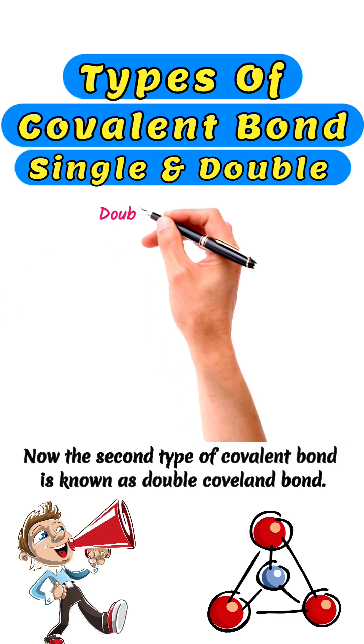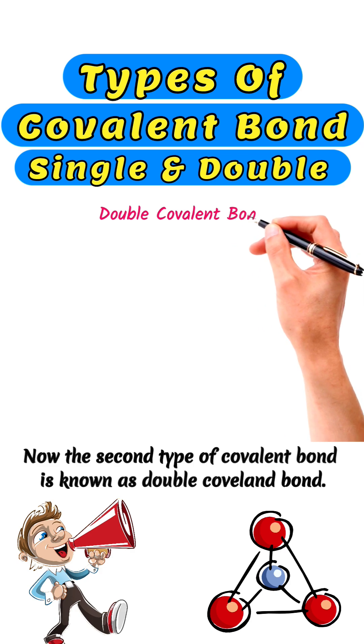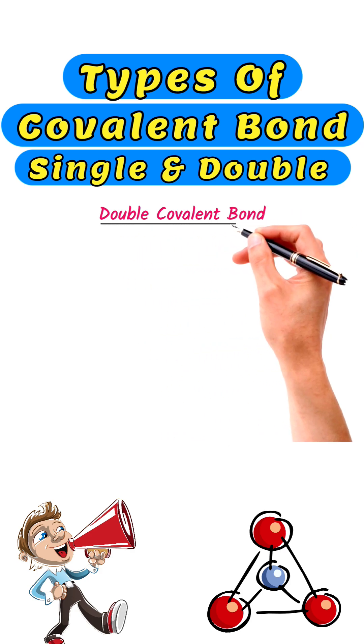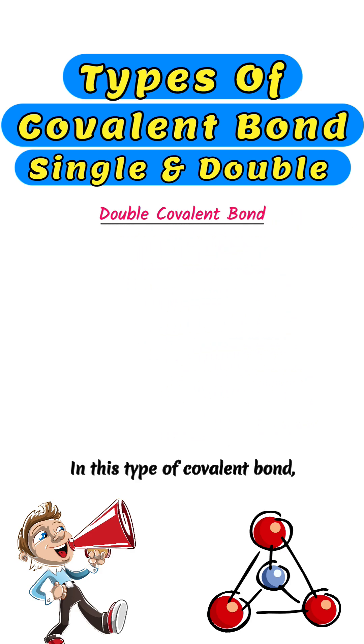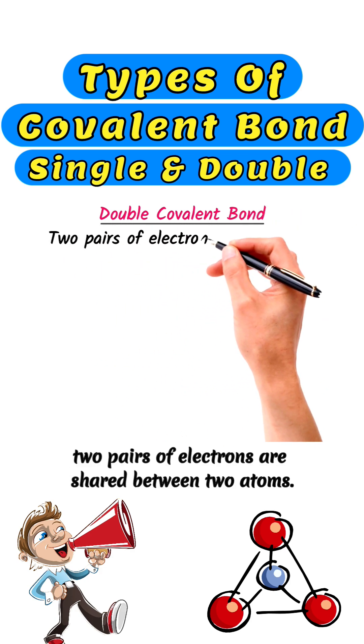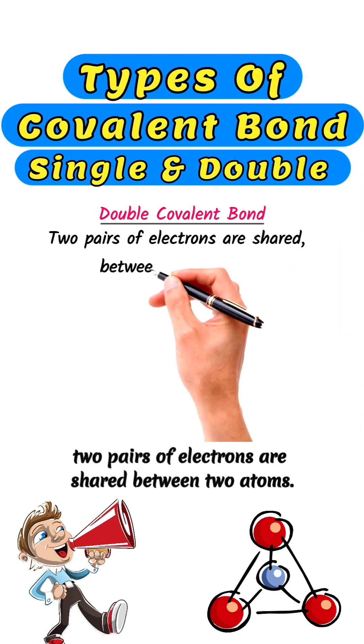The second type of covalent bond is known as a double covalent bond. In this type of covalent bond, two pairs of electrons are shared between two atoms.